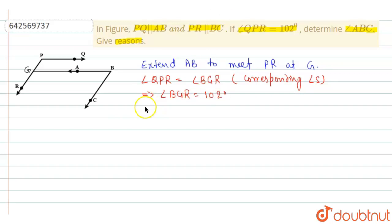Again, angle RGB plus angle CBG is equal to 180 degrees because they are co-interior angles.